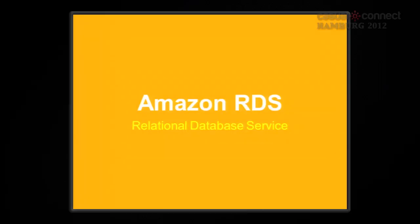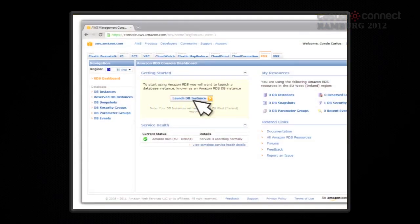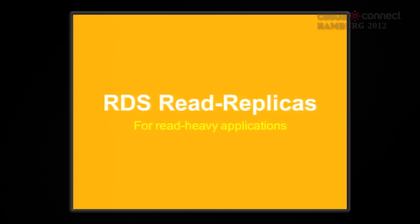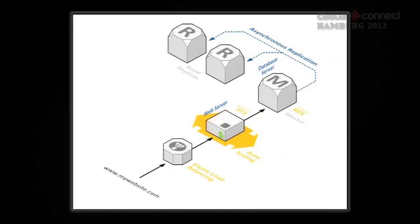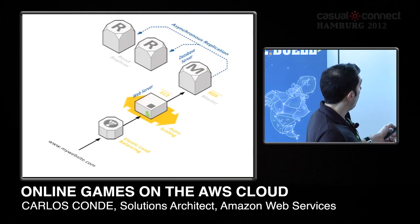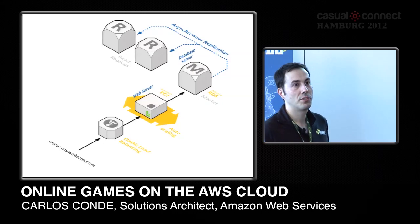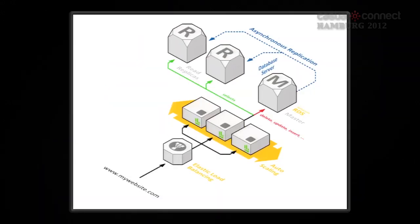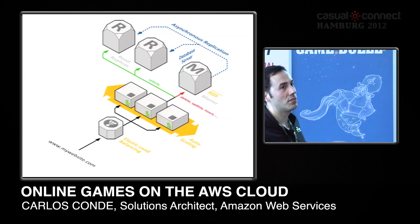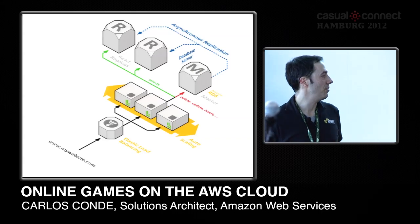You can start with traditional relational databases using Amazon RDS. One key feature is read replicas. When you have your web server using a database, you create read replicas of the master. Your data is on the master and is replicated to other servers. As you add more web servers to handle more players, those servers can write to the master but read from the slaves, distributing the load on the SQL databases.